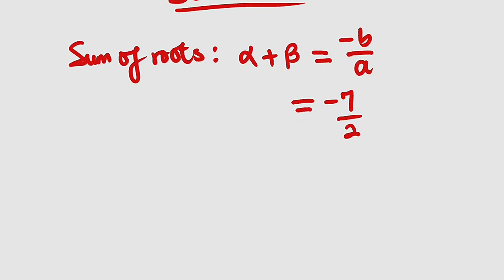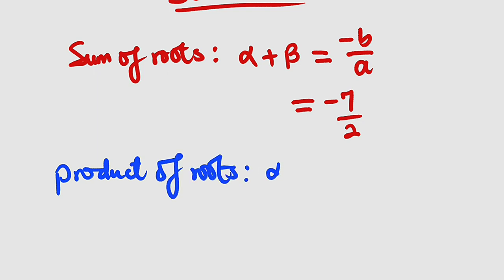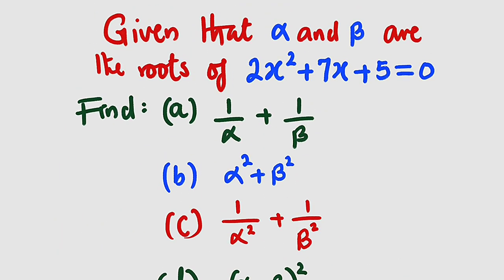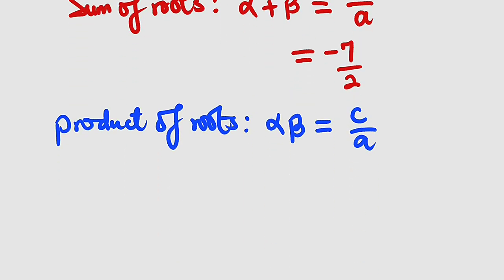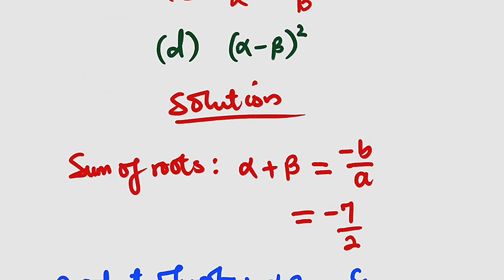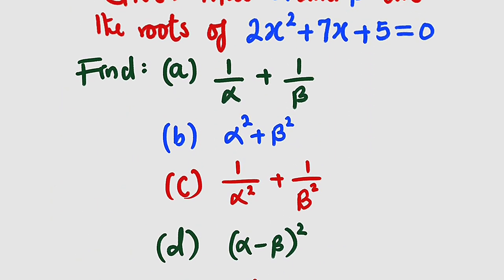The product of roots, alpha multiplied by beta, has its own formula: c divided by a, where c is the constant term and a is the leading coefficient. So we have the constant term divided by the leading coefficient, which is 5 divided by 2. We are going to be using the sum and the product to evaluate all four symmetrical functions.